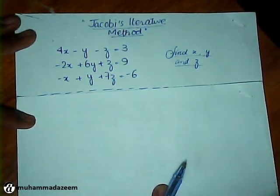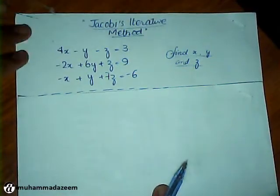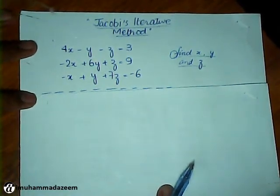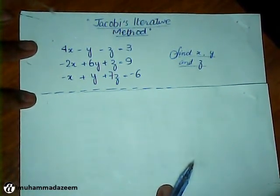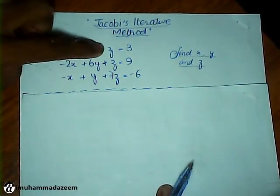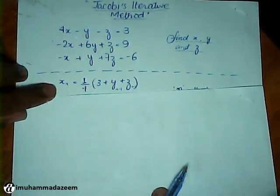This is the question, so we have to find the X, Y, and Z from this system of equations. The Jacobi's iterative method is as follows: we first isolate equations for these three variables separately.